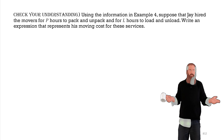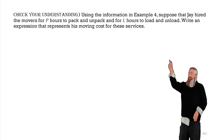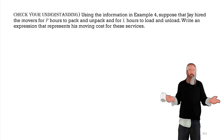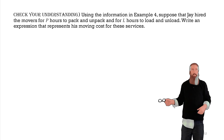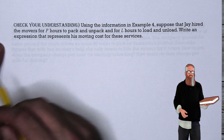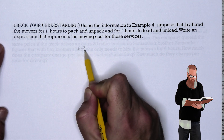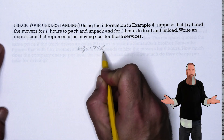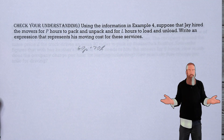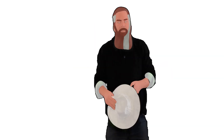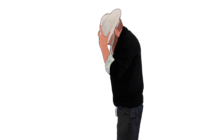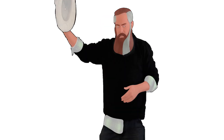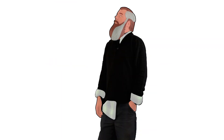Let's check our understanding. If Jay hired movers for P hours to pack and unpack and L hours to load and unload, the expression for his total moving cost would be 60P + 70L. The elimination method algebraically manipulates one or both equations so that the coefficients of one variable are opposite and cancel when combined.